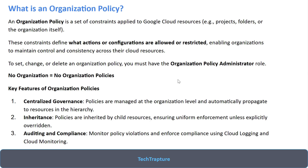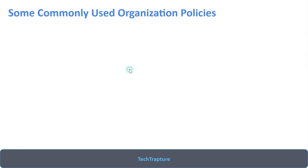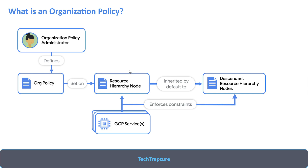The organization policy administrator defines the policy and applies it on a resource hierarchy node — your organization, folders, or projects. Once applied, it is inherited by default to all lower-level resources. If you add a policy on a folder, it is inherited by all projects within that folder. These constraints ultimately apply to all resources within scope.